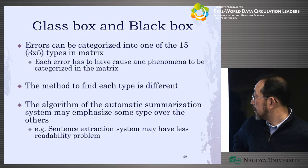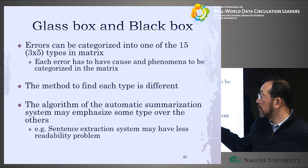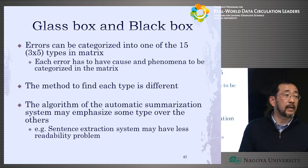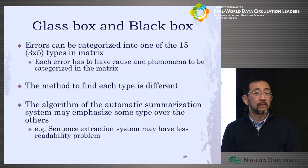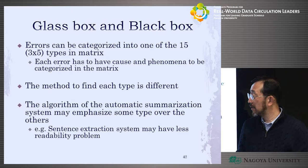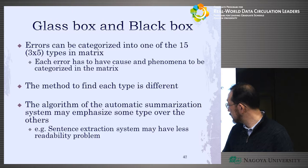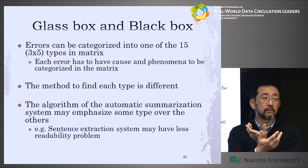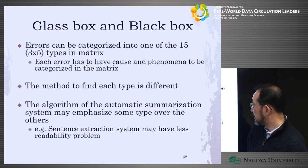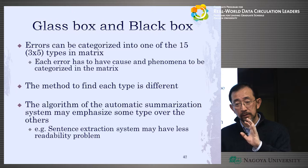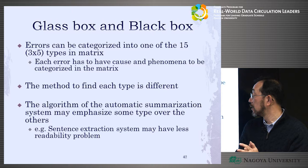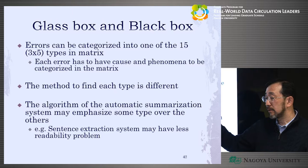Also, different kinds of systems need to pay attention to different cells in the matrix. For a sentence extraction system — for example, picking the top three sentences from a 20-sentence newspaper article — readability is not so important because extracted sentences are already grammatical. But if the summarization system changes word ordering in a sentence, readability becomes a serious problem. Different kinds of systems emphasize different cells.